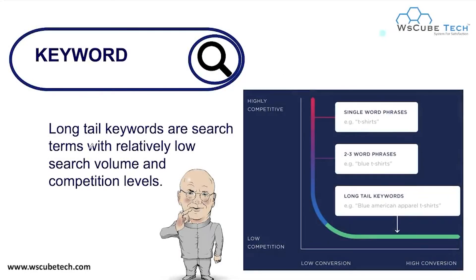Long tail keywords are search terms with relatively low search volume and having less competition. Just because of low search volume, we have less competition, but we have high conversion. You can see here that a single word like 'T-shirt' is highly competitive, but comparing the competitiveness of long tail keywords with other search terms, long tail keywords are less competitive but have a high conversion rate.